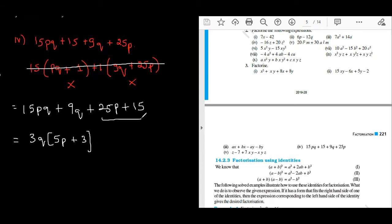And from these two terms, 5 is common. So, 5P plus 3. Can you see, these two brackets are same. That means it is correct.